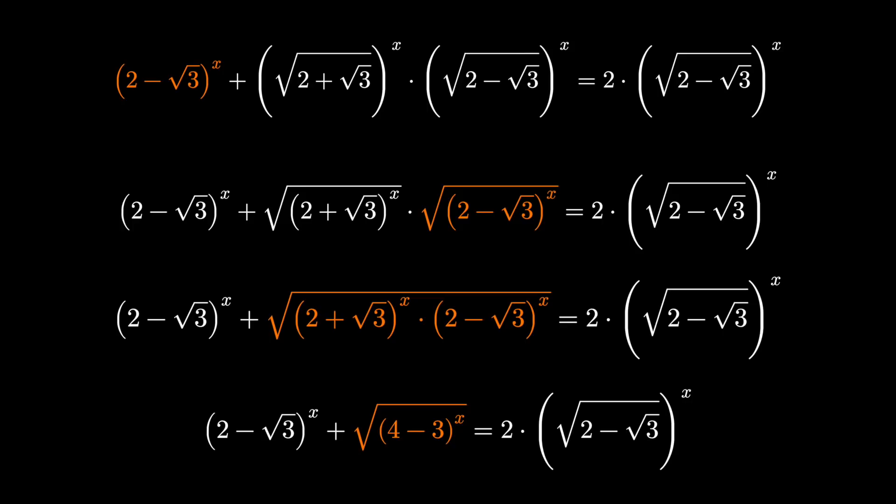And that middle term is canceling out that's great because under the radical is 4 minus 3 that's 1, and 1 to any power we'll just call 1.